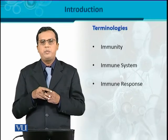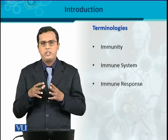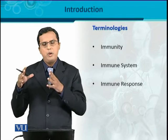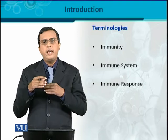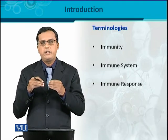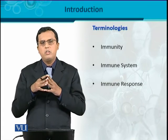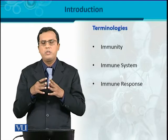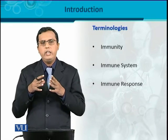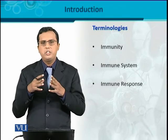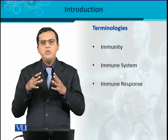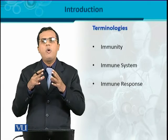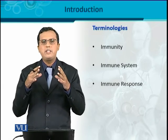Next is immune response. Immune response is basically the events or reactions exhibited by the immune system. Just like an army shows a reaction and events to protect a country's boundary whenever there is a need — similarly, all those events and reactions are called a response. Immune response is the series of events or reactions exhibited by the immune system — meaning immune cells, immune tissues, and immune molecules — in coordination. That coordination is called the immune response.